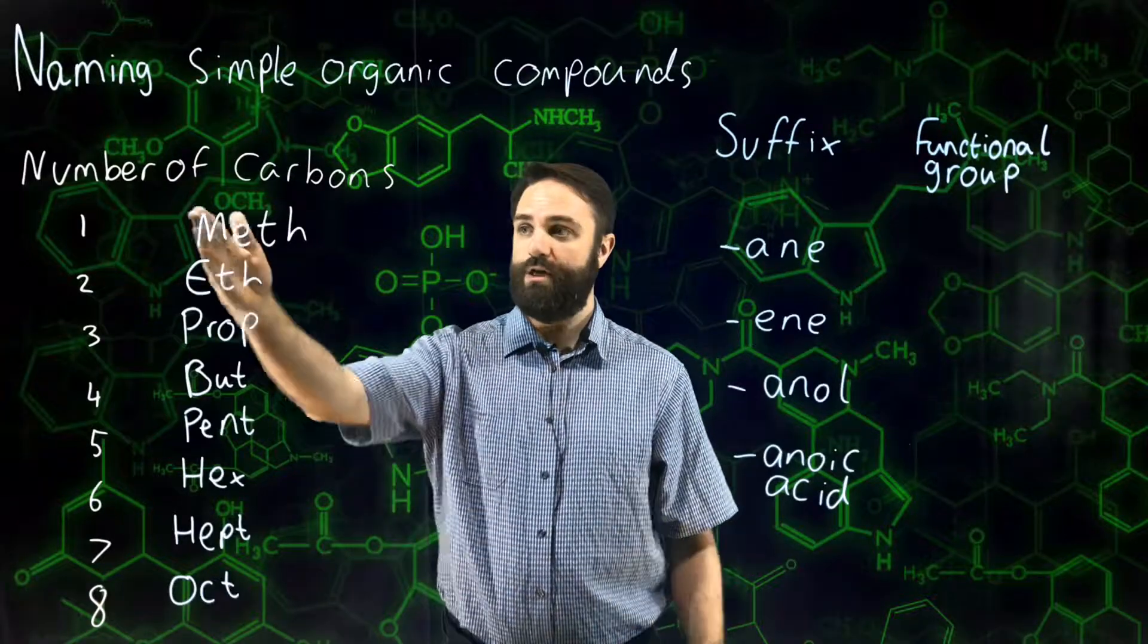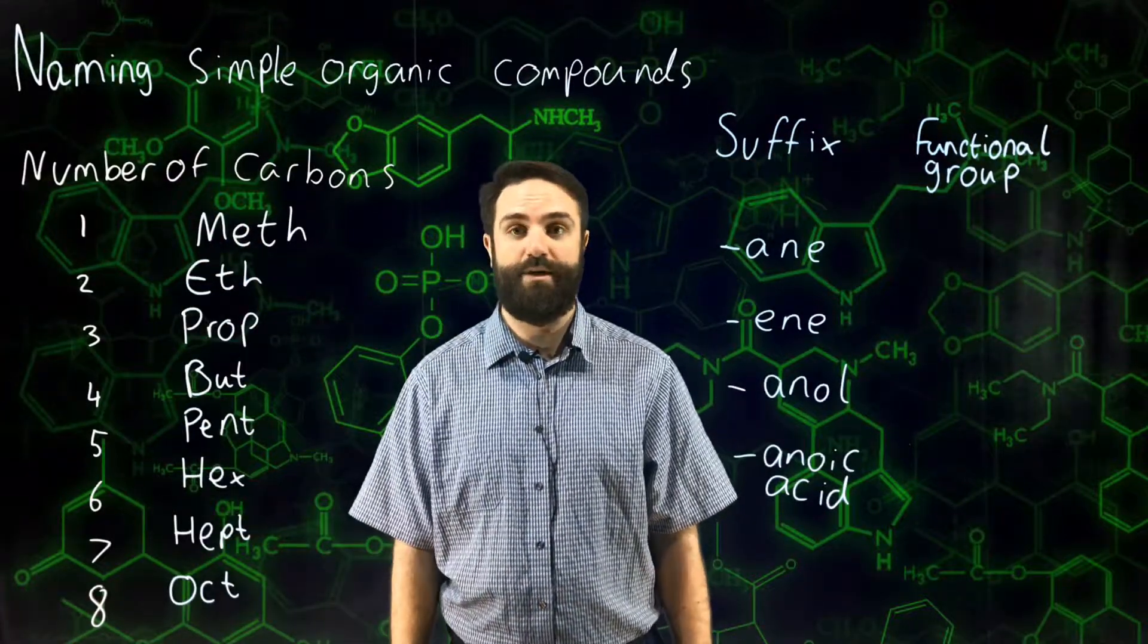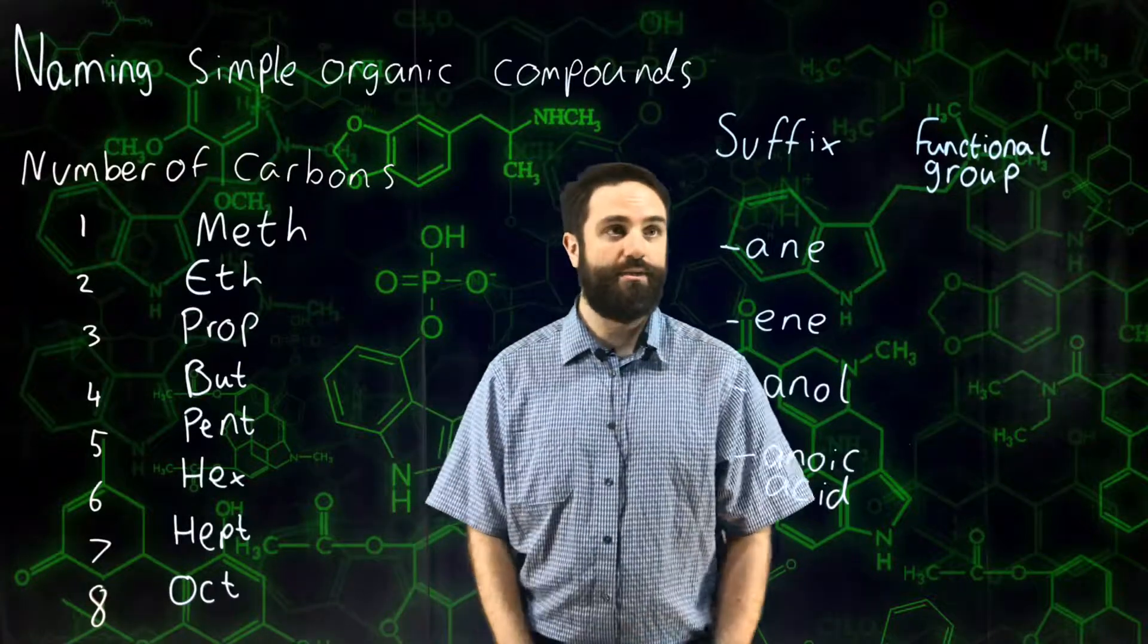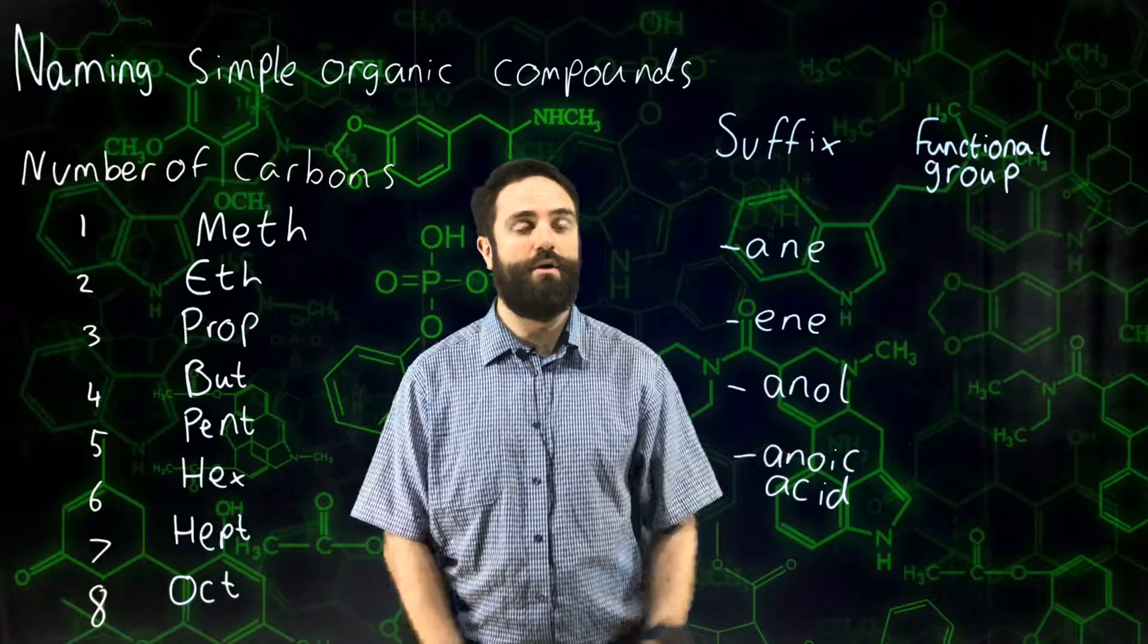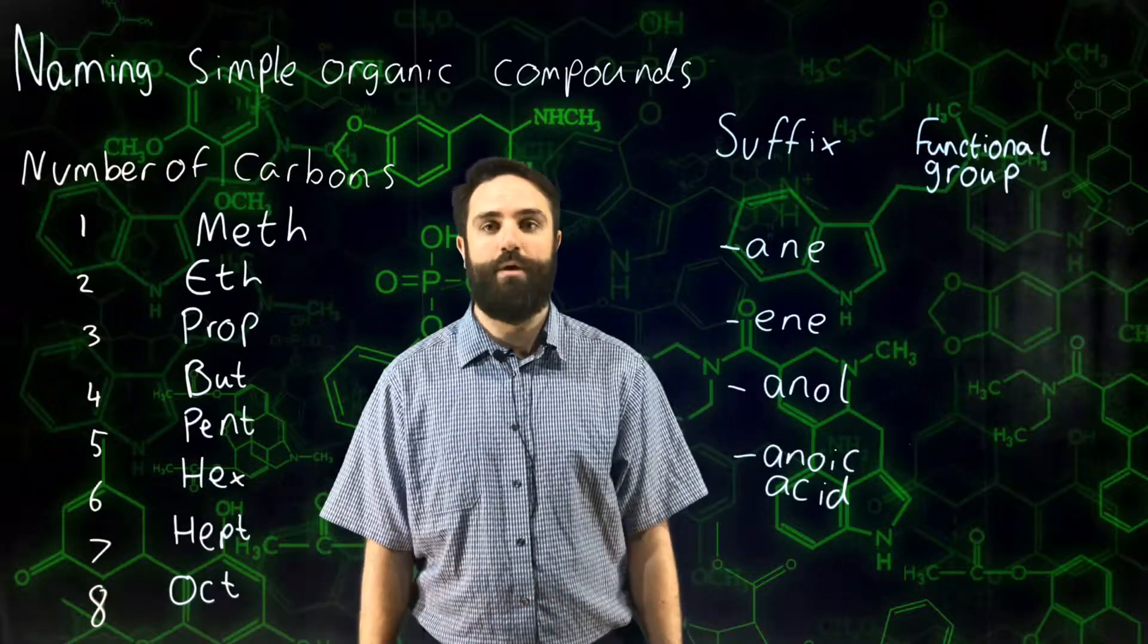So the first thing you do is you look at the prefix and that will tell you the number of carbons that are present. The next thing you need to look at is the second part of the name. That gives you information on the type of organic molecule that it is.